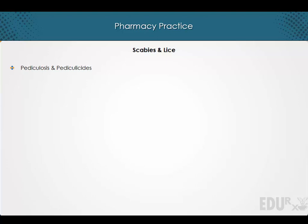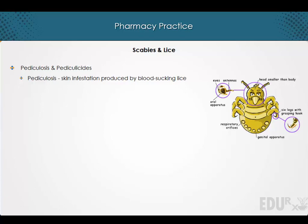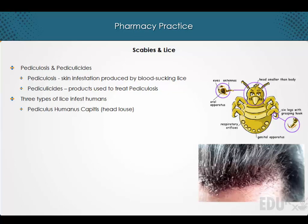Welcome to a lecture on pediculosis and scabies. Pediculosis is a skin infestation produced by blood-sucking lice. Pedicilicides are products used in the management of pediculosis. Three types of lice infest humans: pediculus humanus capitis, also known as head louse; pediculus humanus corporis, also referred to as body louse; and phthirus pubis, also known as pubic or crab louse.